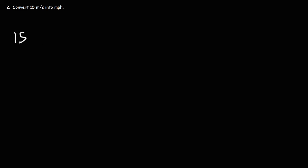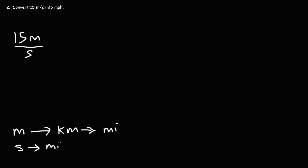Now let's work on this example problem. This time, we're going to go backwards — we're going to convert 15 meters per second into miles per hour. If you want to pause the video and try this example problem, feel free to do that now. So let's start with what we're given: 15 meters per second. We're going to convert meters to kilometers, then kilometers to miles, and afterward seconds to minutes, then minutes to hours. Let's write down the conversion factors that we need.